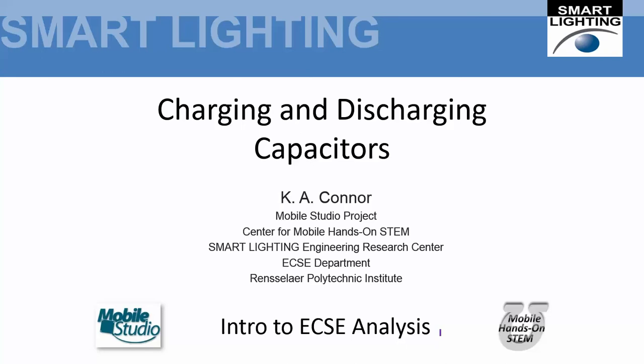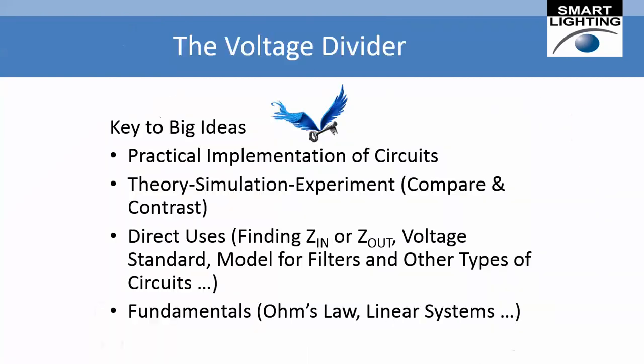When you have a voltage across a capacitor, that means there is a certain amount of charge on it. There is a linear relationship between the charge on the capacitor and the voltage, and the constant of that relationship is the capacitance. So q equals cv is the basic equation we're going to be looking at over and over.